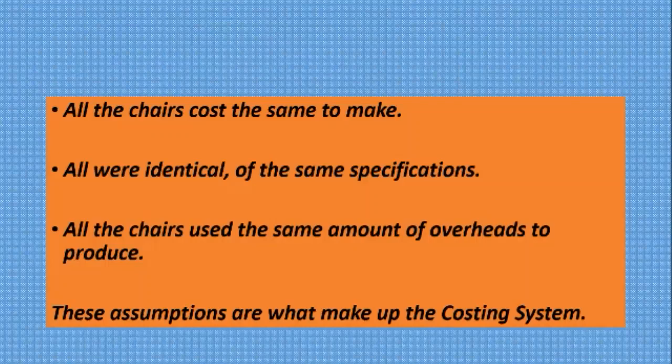Another assumption is that all the chairs were identical and of the same specifications — again, in practice that may not be so. A third assumption is that all the chairs used the same amount of overheads to produce, meaning that rent, depreciation on machinery, and similar costs were applied equally to each chair. Those are the assumptions that make up the costing system.